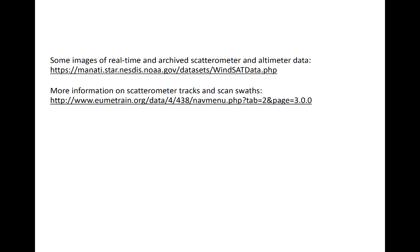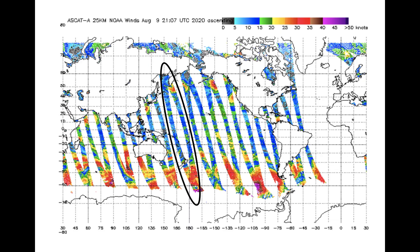Some more information on various scatterometer platforms, past, present, and future, can be found at the bottom link here. Some real-time data can be accessed at the top link, and I'll show you just a little example of that right now. This example was taken from the first link on the previous slide, shown here. This is from the ASCAT instrument on METOP-A.